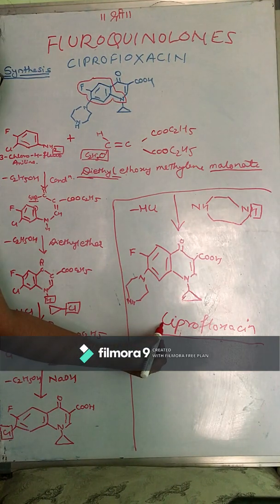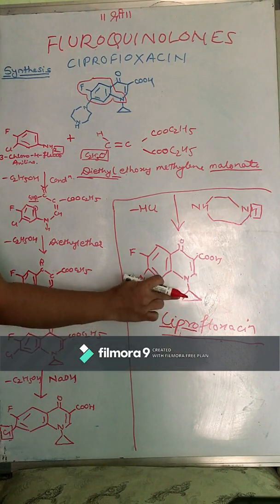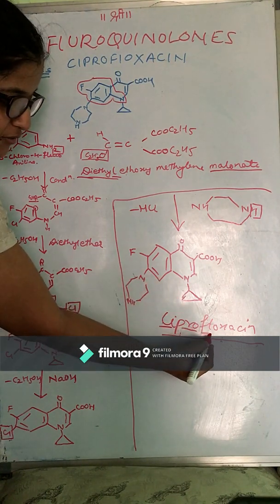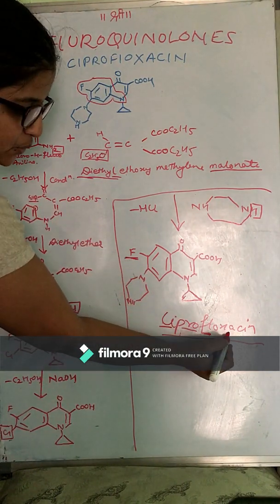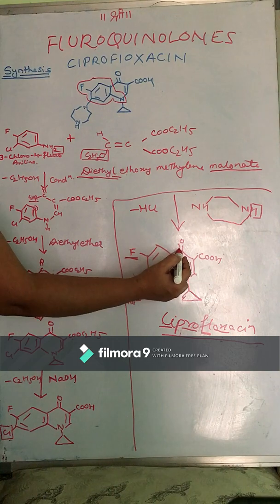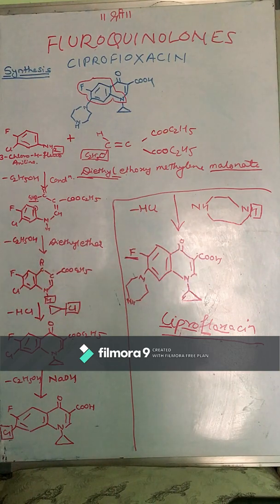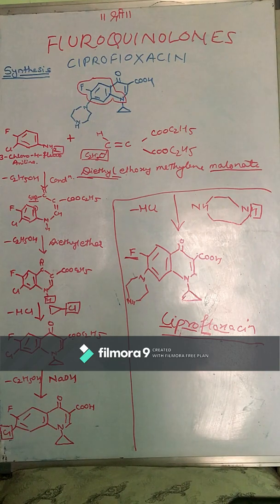In the name ciprofloxacin, 'cipro' refers to the cyclopropyl group present in the structure, and 'fl' stands for the fluorine group in the structure. These are some hints from which we can identify the structure from the name. Thank you so much — if you like my video, please share and subscribe.